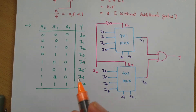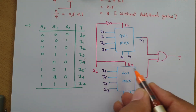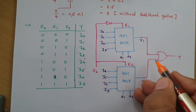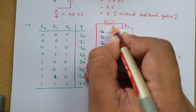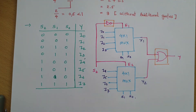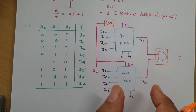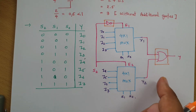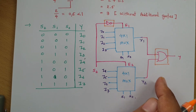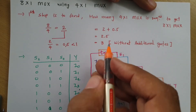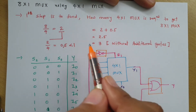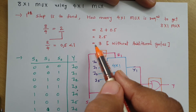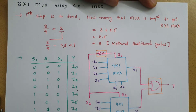Here we have formed an 8x1 multiplexer using an additional OR gate and an additional NOT gate. In a MUX tree, however, we don't use additional gates — we implement higher order MUX using lower order MUX only. So now I'll explain how we can form an 8x1 MUX using 4x1 MUX without any additional gate. In that case we need to use 3 4x1 MUX.